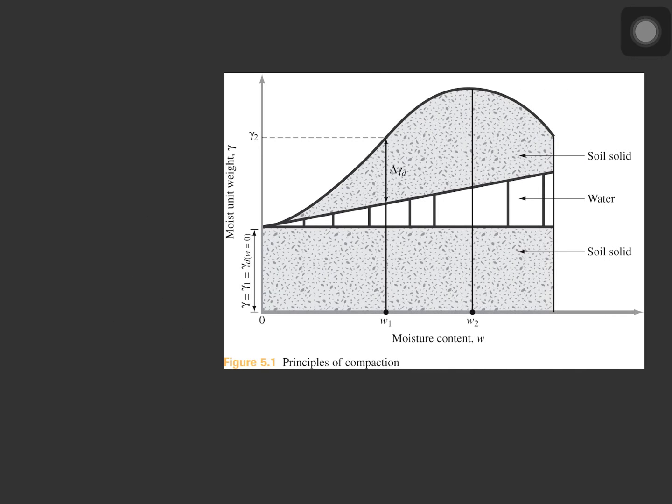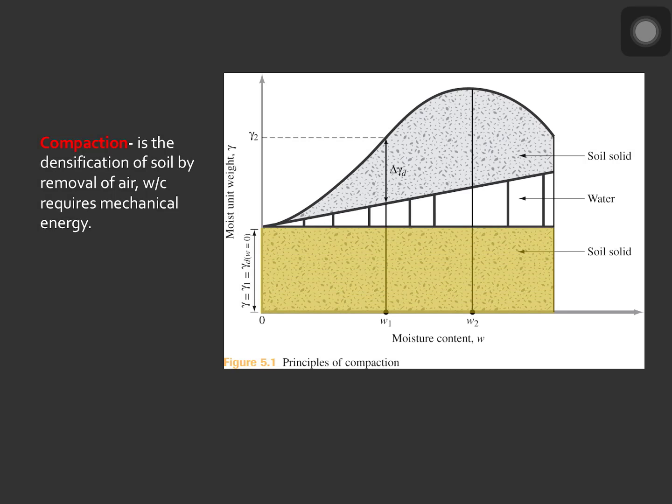Let us discuss the principles of compaction using the figure on the screen. Compaction in general is the densification of soil by removal of air, which requires mechanical energy. Let us consider this part as our soil solid. The degree of compaction of a soil is measured in terms of its dry unit weight.